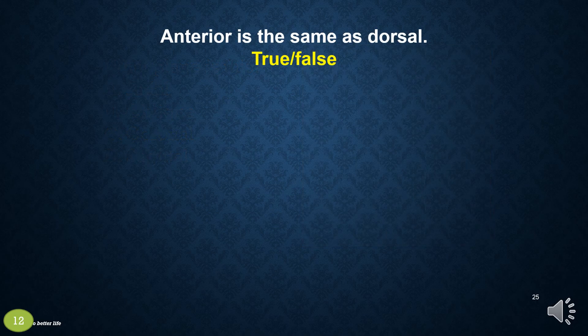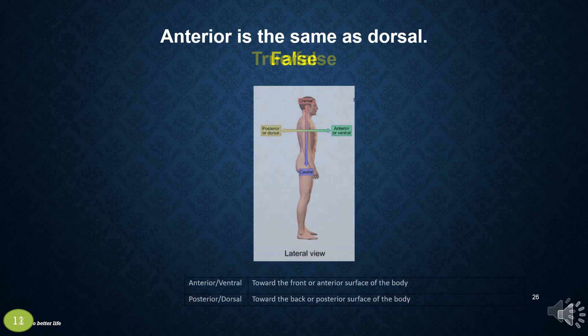Anterior is the same as dorsal. True or false? False. Anterior is the same as ventral, not dorsal.